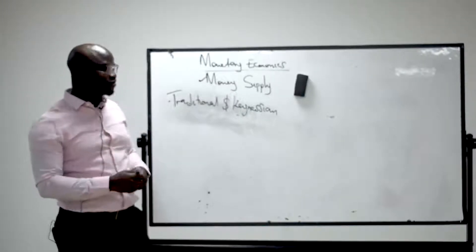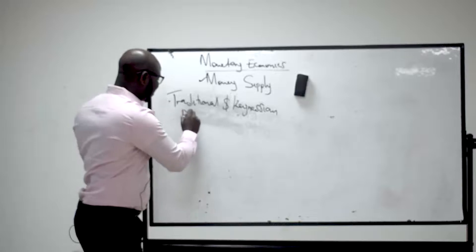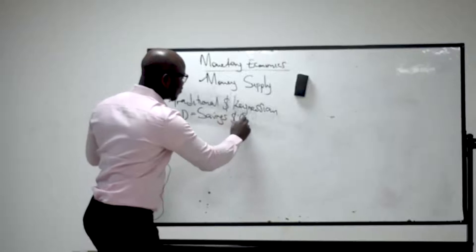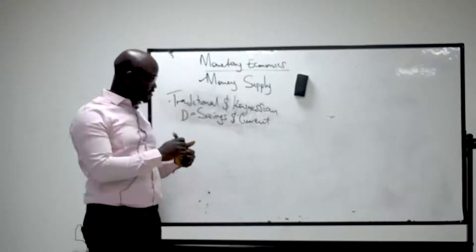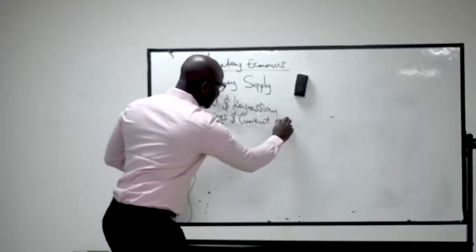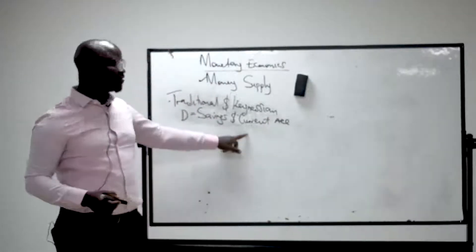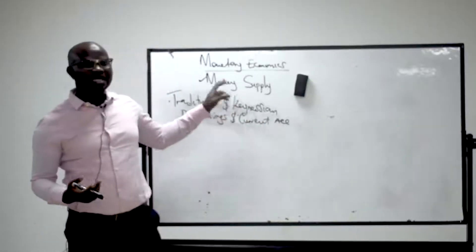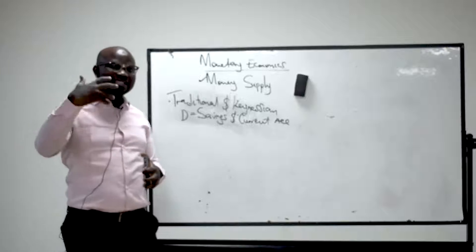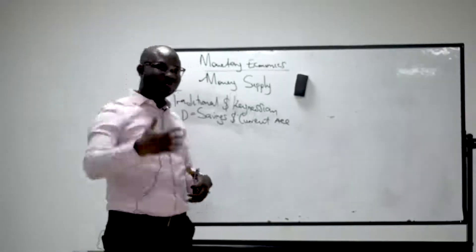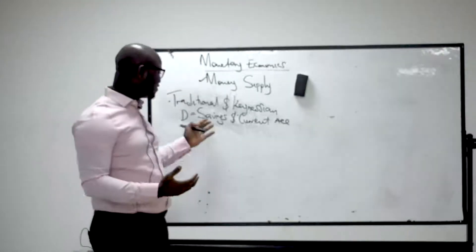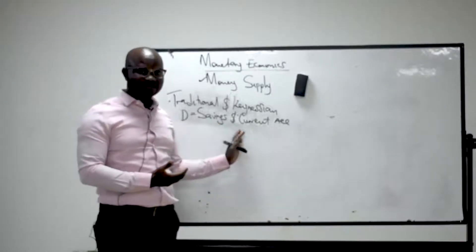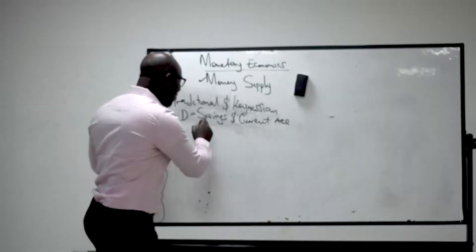According to the traditional and Keynesian school of thought, the demand deposit is a combination of savings and current account. So money supply is the combination of the currency in the hands of the public plus the demand deposit, where demand deposit is divided into savings and current account.